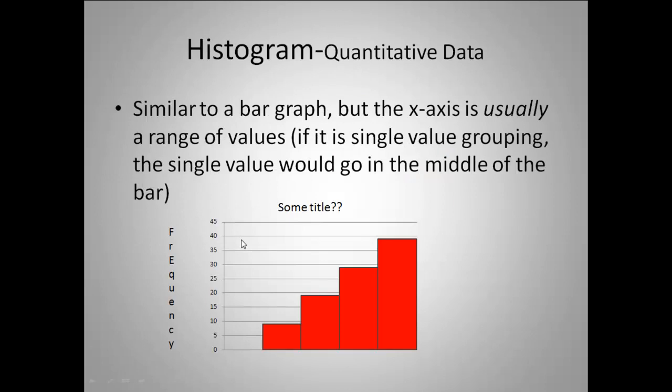A histogram is very similar to a bar graph, but the x-axis is usually a range of values. On this diagram I left my x-axis off. What that might look like would be here's my 0, here's my 10, 20, 30, 40, and 50. Now the reason that a histogram has no gaps is because it is on a continuum. So there was nothing from 0 up to but under 10, and then from 10 up to but under 20, and so on and so forth. So there is no space in between here.